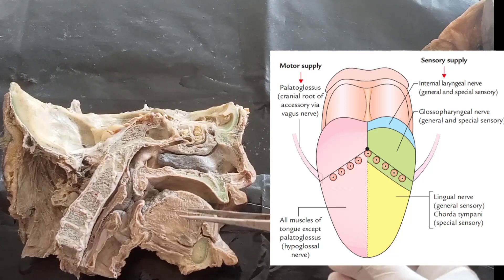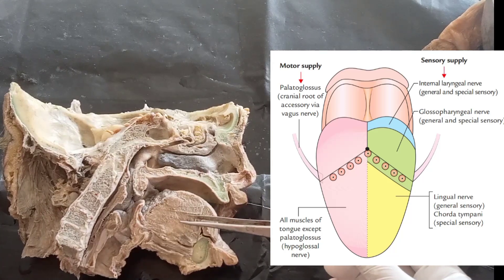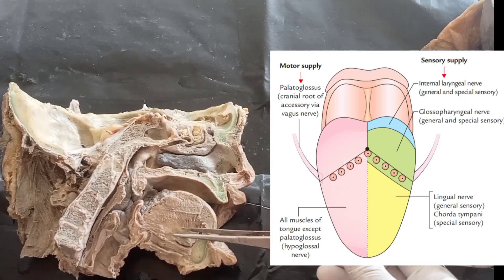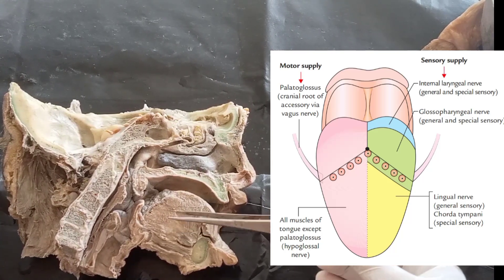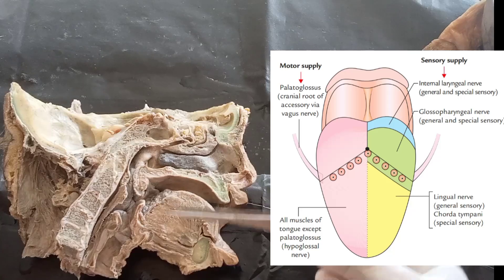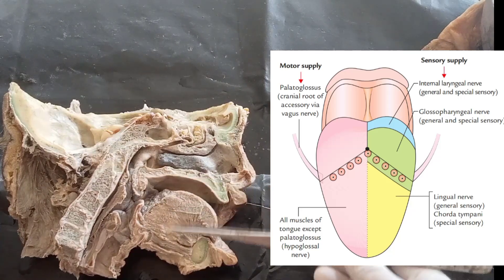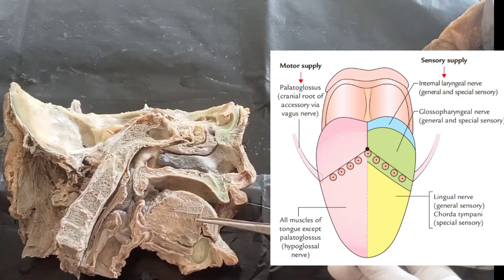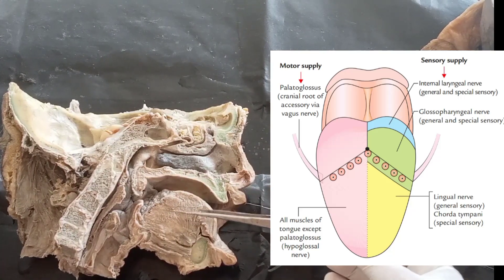For sensory nerve supply, the anterior two-thirds of the tongue is supplied by the lingual nerve, which is a branch of the mandibular nerve, and the chorda tympani nerve. The chorda tympani nerve carries special sensation, while the lingual nerve carries general sensation.